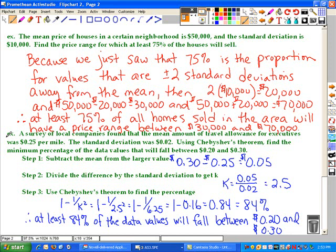There are three steps involved in this particular calculation. The first step says, subtract the mean from the larger value that we were given in our range. So $0.30 is our highest value. We're going to subtract our mean of $0.25 and get $0.05. Step two says, divide this difference by the standard deviation to get K. So our difference of 5 cents divided by the standard deviation, which we were given in the problem, 2 cents, gives us a K value of 2.5.